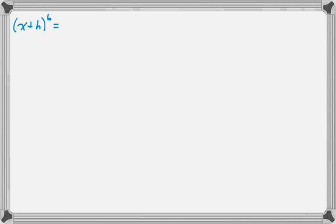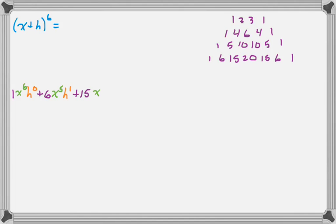We have the quantity x plus h to the 6th. So we really just need the 6th row here. So let's generate that. All right. I'm just going to plow right through this. So you can see pulling coefficients. The degree of the 1st thing is decreasing. The 2nd thing is increasing. The exponents are always adding up to 6 in this case.